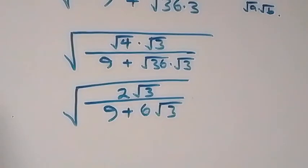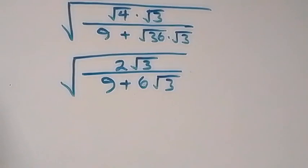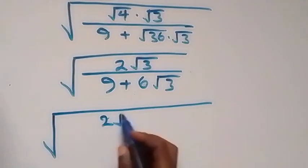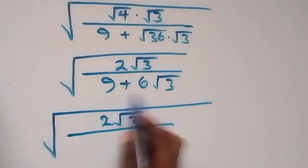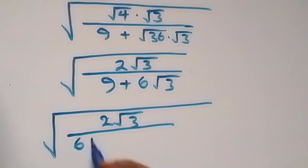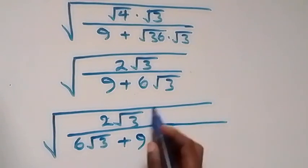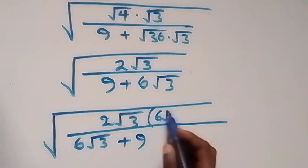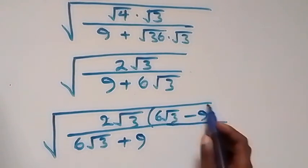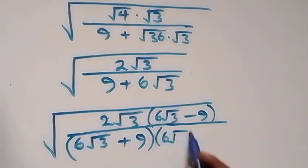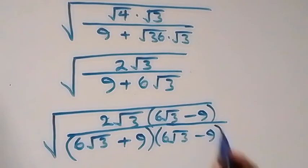What we have here, we can rationalize the expression inside. We multiply by the conjugate and also divide by it. So this becomes square root of 2√3 over 6√3 plus 9, multiplied by the conjugate (6√3 minus 9) over (6√3 minus 9).